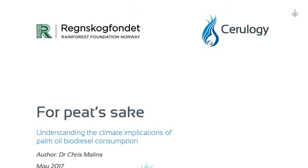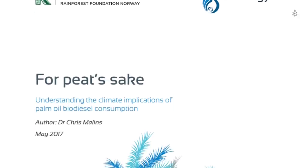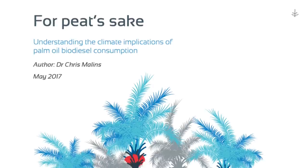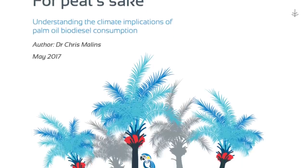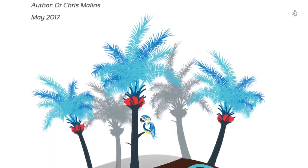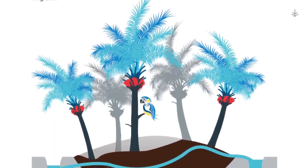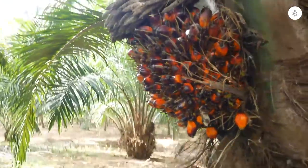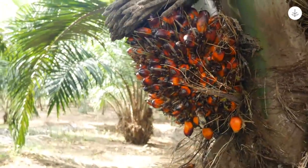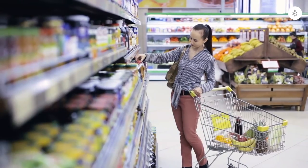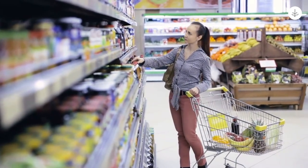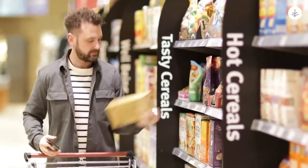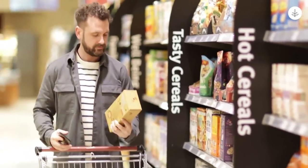Norway's Rainforest Foundation commissioned a 2017 report on palm oil-based biofuels and found them to be more damaging to the climate than fossil fuels, perhaps several times worse. The EU is working toward a 2030 deadline to phase out the use of palm oil. In 2018, British supermarket Iceland introduced a self-imposed ban on palm oil in all of its private label products.